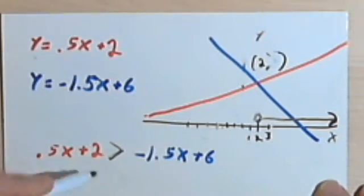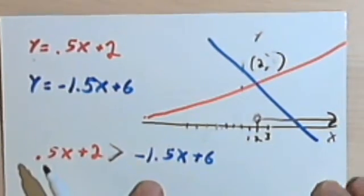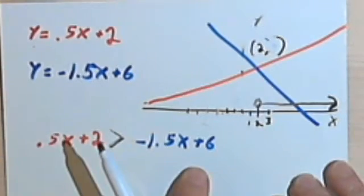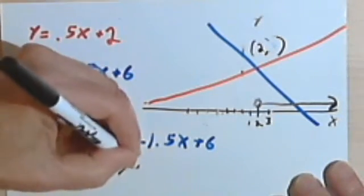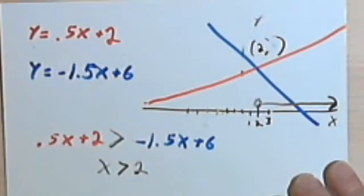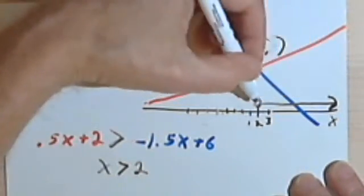Writing this out as what would be the solution to this inequality if I actually did the algebra, I would get x is greater than 2. That's what this line shows me here.